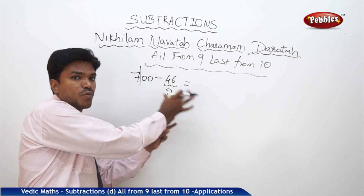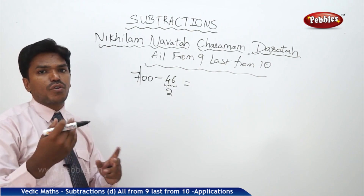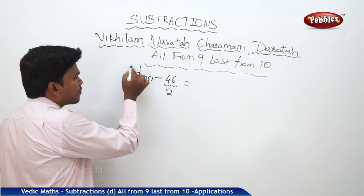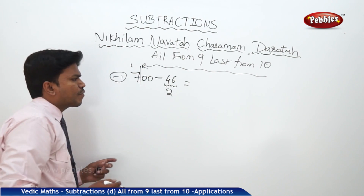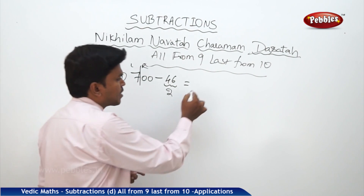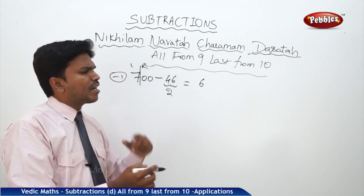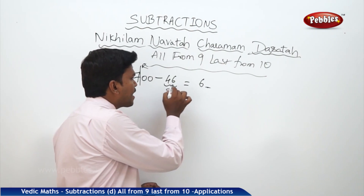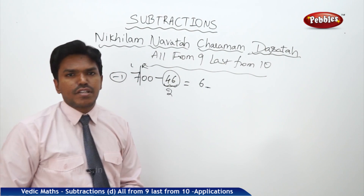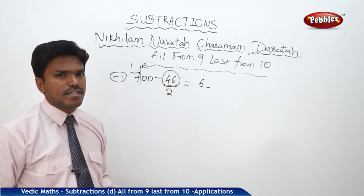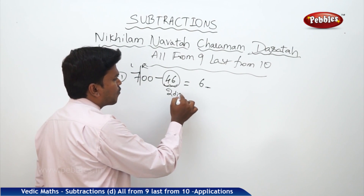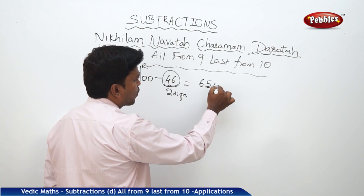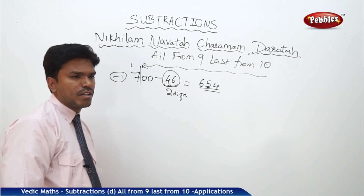If it is 2 digits, partition 2 digits from right; if 3 digits, partition 3 digits from right; if 4 digits, 4 digits from right — like that. Now the number is divided into left and right parts. For the left part, subtract one: 7 becomes 6. To get the remaining answer, apply 'all from nine, last from ten' to the subtrahend 46. That gives 5, 4. So my answer is 654.